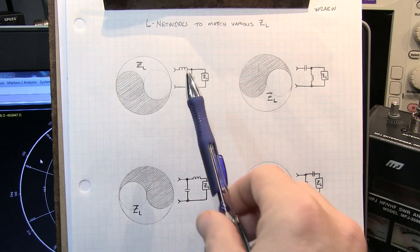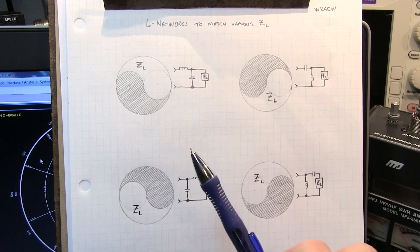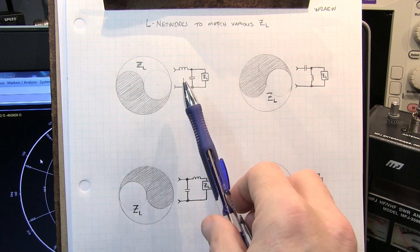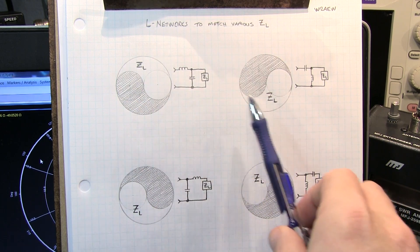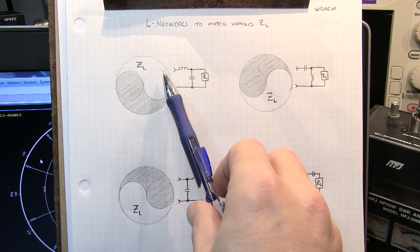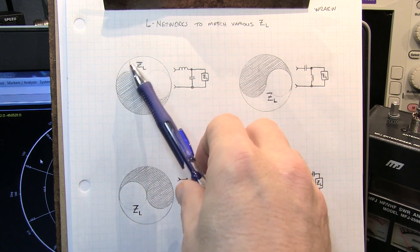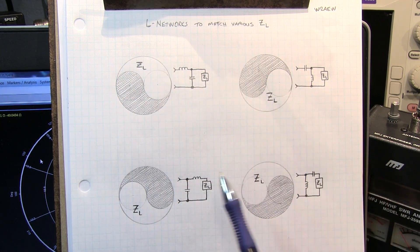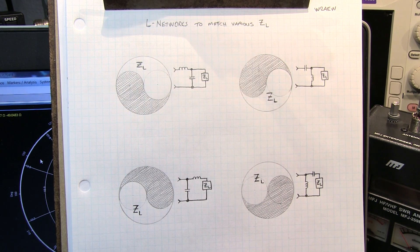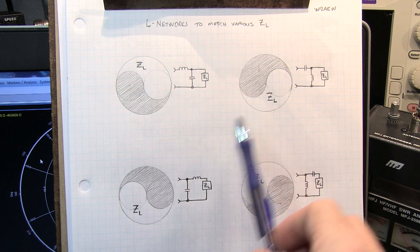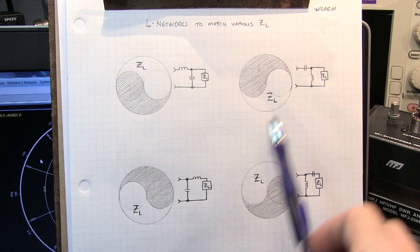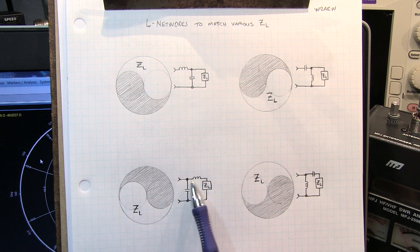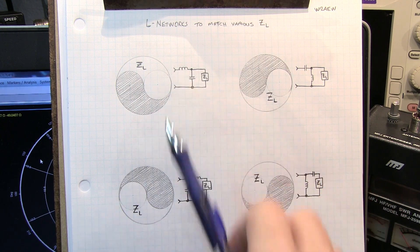Now while the L network is very simple and easy to design, one network configuration can't be used to match all possible load impedances. So this set of yin-yang drawings here of the Smith chart basically show you what impedances can be matched by each of these four configurations of the L network. Now you may notice that for some impedances, like let's say our impedance was down in this area, that could be matched by either a series C and shunt L or by a shunt C and series L, because either one of those are in the unshaded areas.